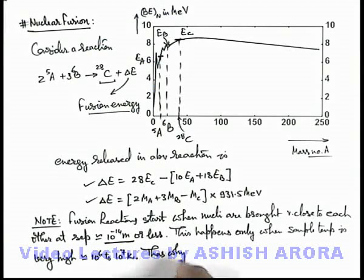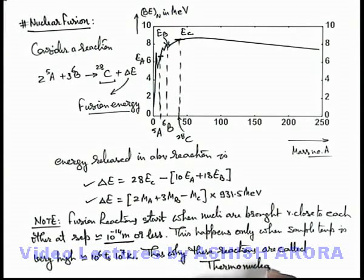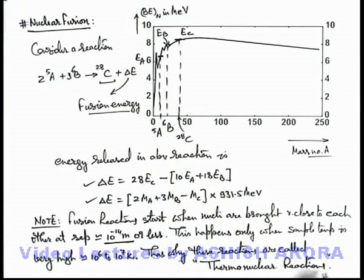These reactions are called thermonuclear reactions, because to start the nuclear reaction, the separation should be very small. For this we need to raise the temperature to a very high extent, and to control such a high temperature within a confined region itself is a typical process. That's why fusion reactions involve lot of logistics in the execution part. That's why these are called thermonuclear reactions.